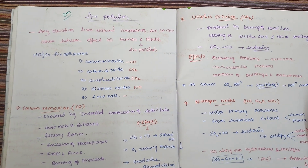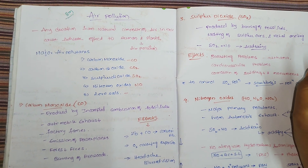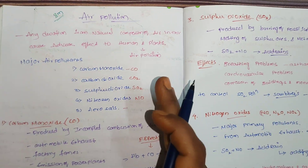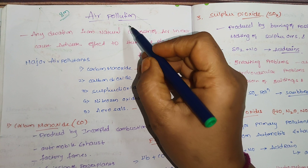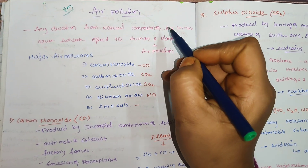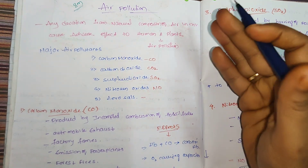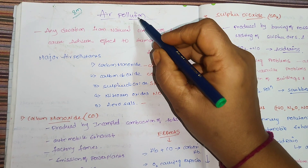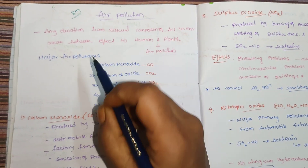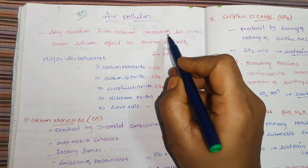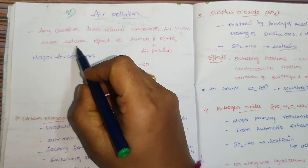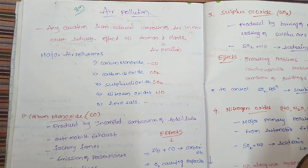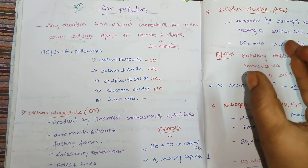We have different types of pollution: water pollution, soil pollution, and noise pollution. But the long answer question is air pollution. Pollution means the undesirable physical, biological, and environmental changes caused by pollution. Any deviation from the natural composition of air in the environment that affects humans as well as plants is called air pollution.